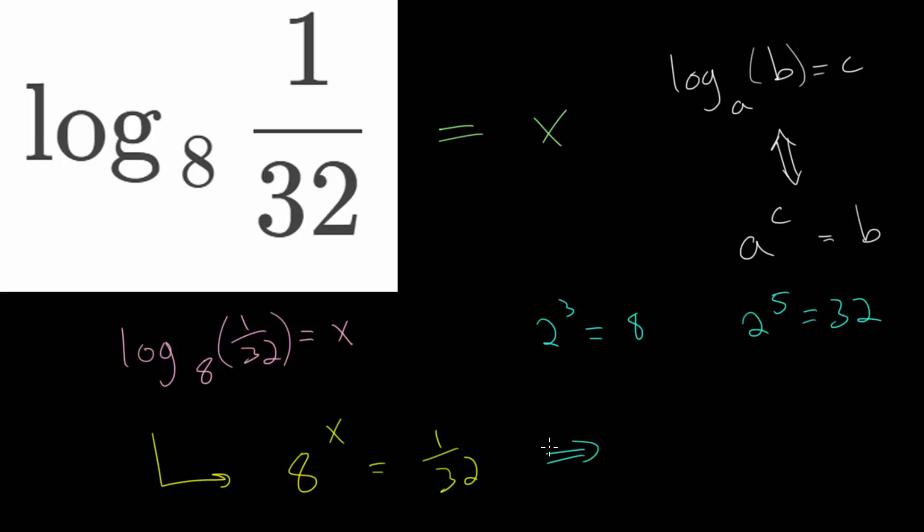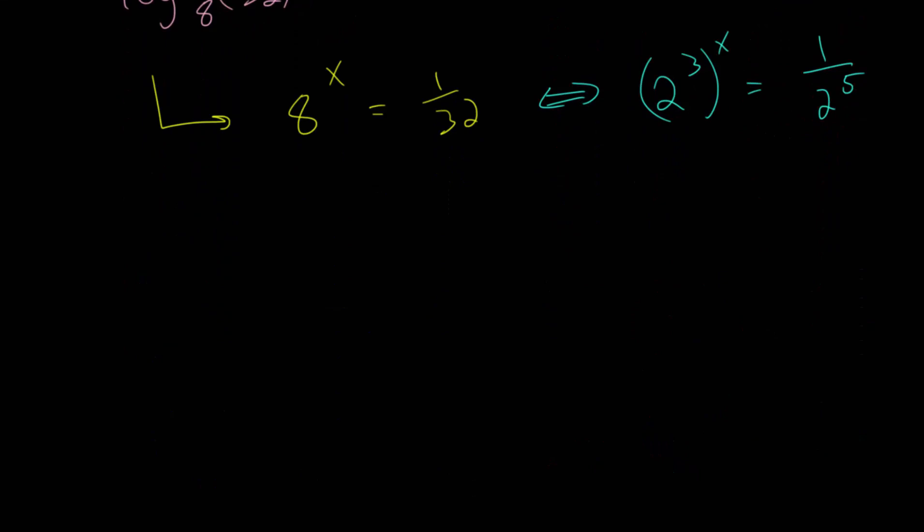So let's plug in what we know. We have 8 to the x or 2 to the 3rd raised to the x power is equal to 1 over 2 to the 5th. And let me just make a bit more room here so we can continue this. And we know that when we have an exponent to an exponent, we multiply. So this becomes 2 to the 3x power. And over here, we are dividing by 2 five times. We can rewrite this with a negative exponent as 2 to the minus 5 power. And now they have the same base, so we can just equate the exponents.